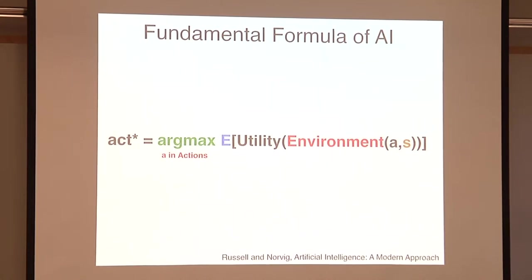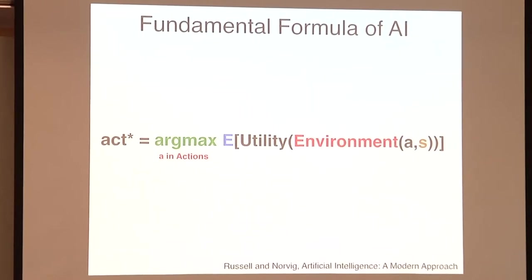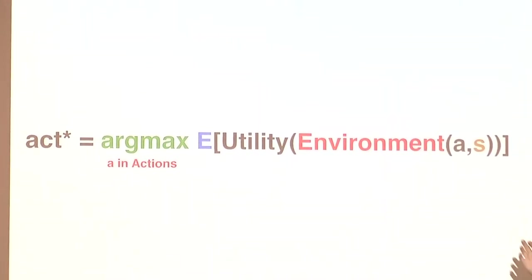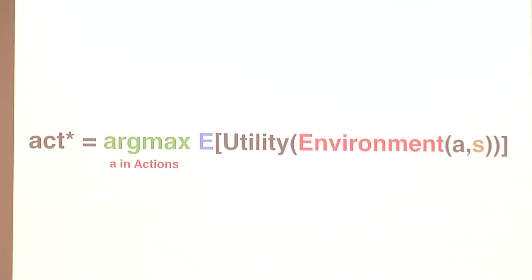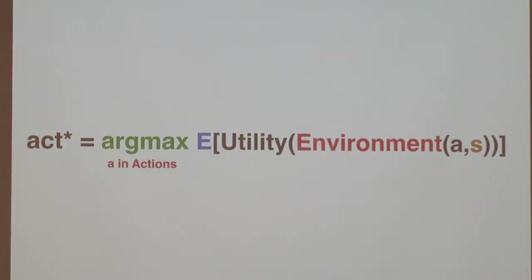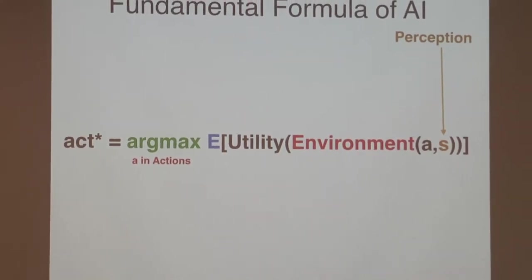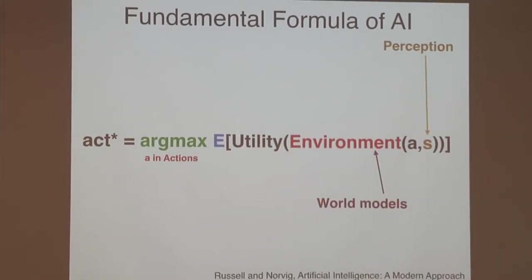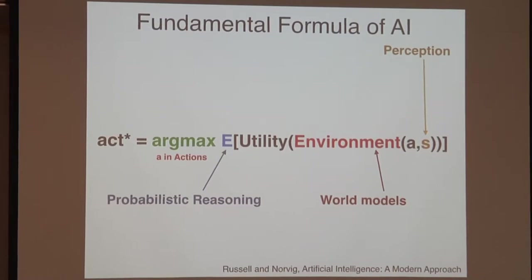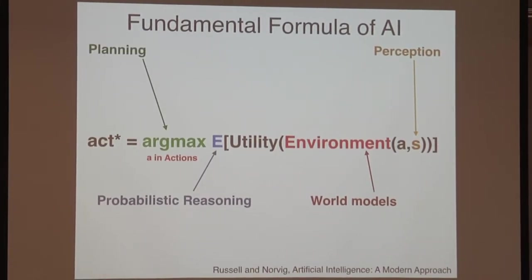So the goal I have is to understand those capabilities. I like to start with a slide from Peter Norvig — the basic equation of what it means to be an intelligent agent from Russell and Norvig. Very straightforward: you have an environment, you have some utility or preferences over that environment, and you want to choose actions to maximize an agent's utility. This is the basic equation for what a reverse engineering perspective might look like. It needs to be written in these terms — perception, world models, probabilistic reasoning, and planning.